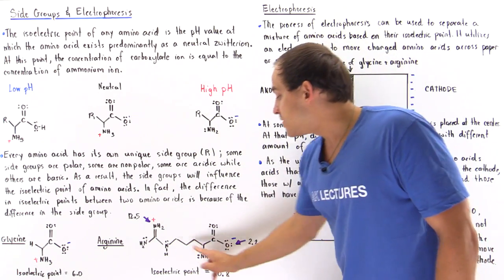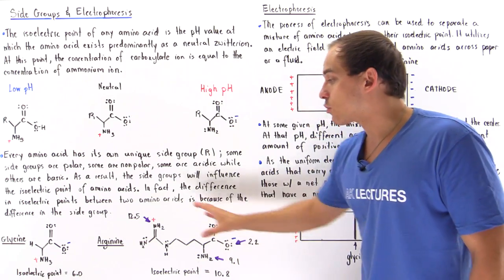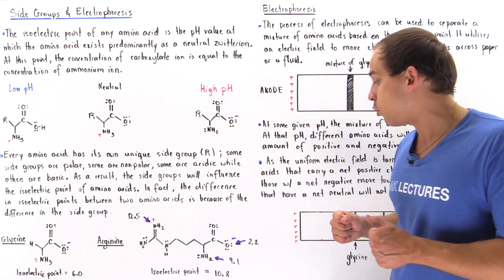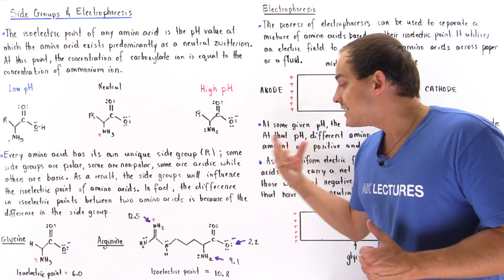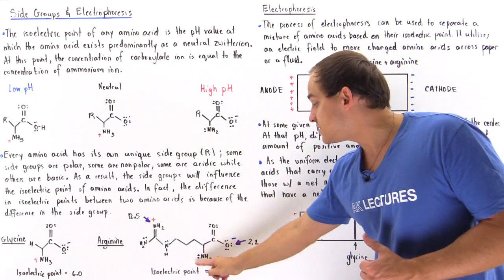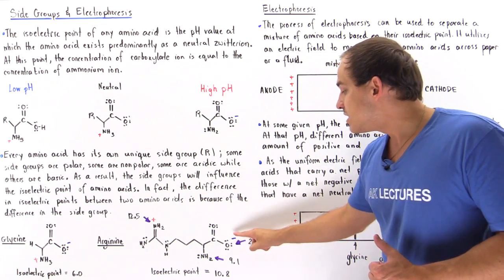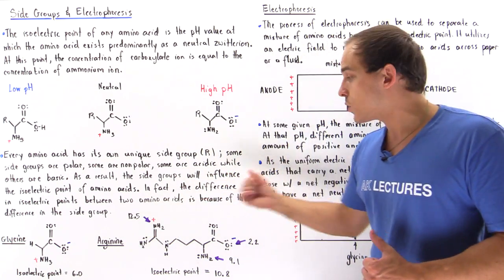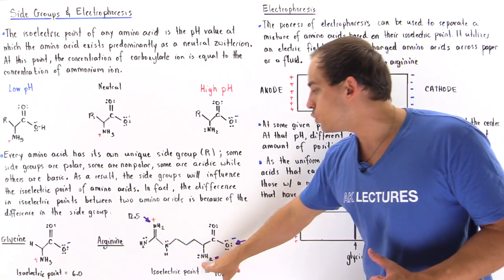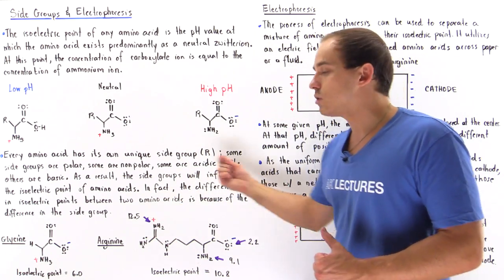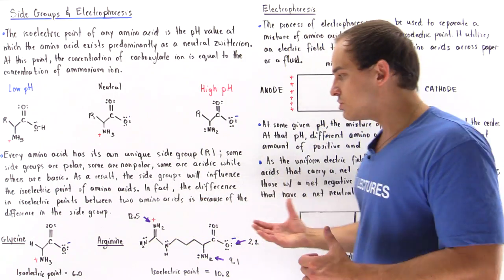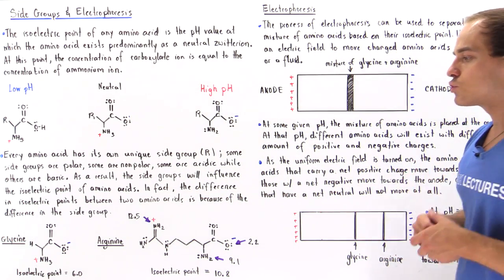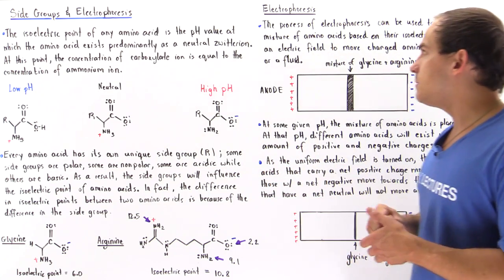The isoelectric point for arginine is 10.8. At a pH of 10.8, the side chain nitrogen deprotonates giving a net charge of zero on that section, the carboxylate is also deprotonated giving a negative charge, and the ammonium group is still protonated giving a positive charge — so negative, neutral, and positive gives an overall charge of zero. This shows that the R group actually influences the isoelectric point of the amino acid.